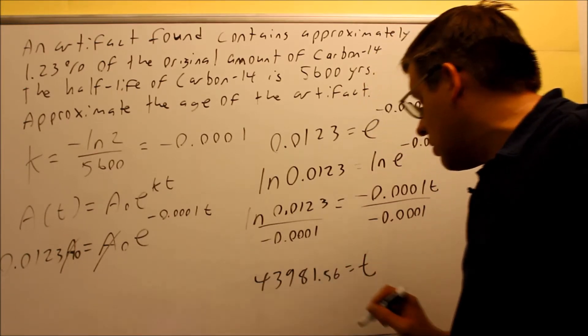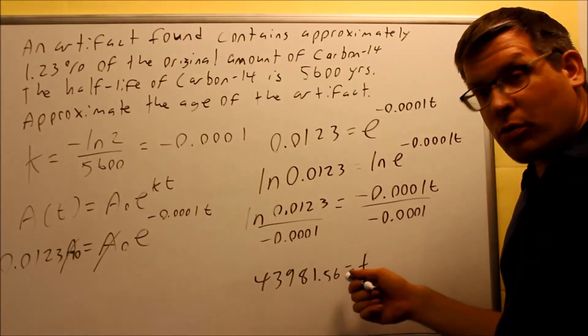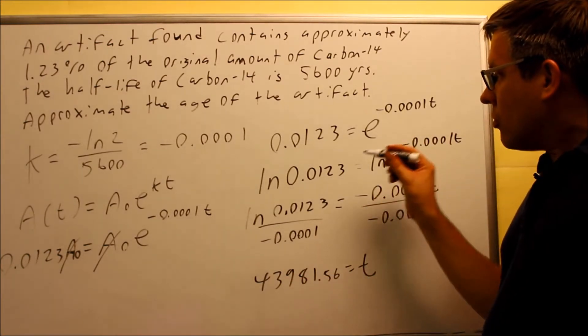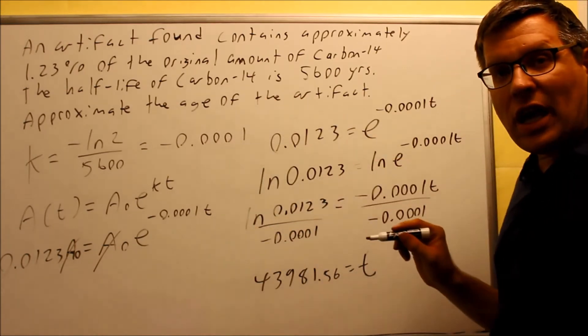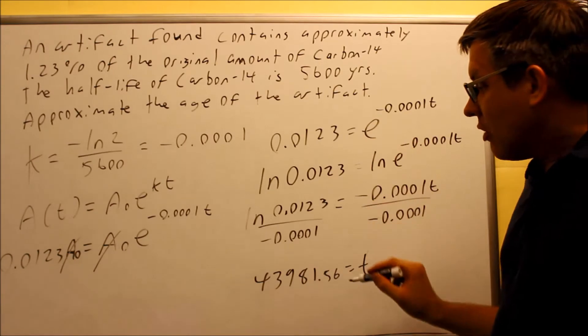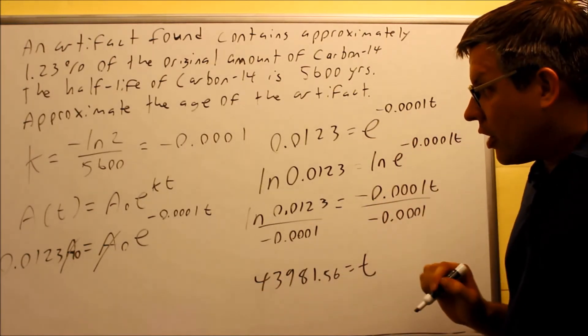So this is the amount rounded to two places, 43981.56. Now keep in mind, if you used a different value for k, if you expanded that out and had more decimal places, your answer is going to be drastically different from here.